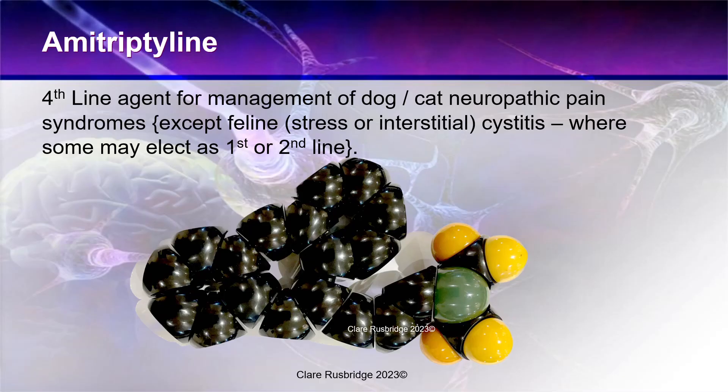Amitriptyline I would regard as a fourth-line agent for management of neuropathic pain, meaning there'll be at least three drugs that I would choose before selecting this drug. That's really because it's a drug with a lot more adverse effects and needs more monitoring, so it's a little more complicated to give. You would choose easier options like gabapentin, pregabalin, and perhaps topiramate first.